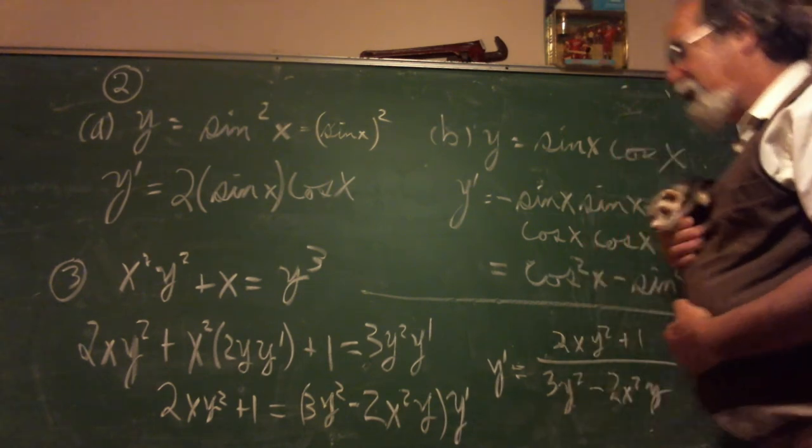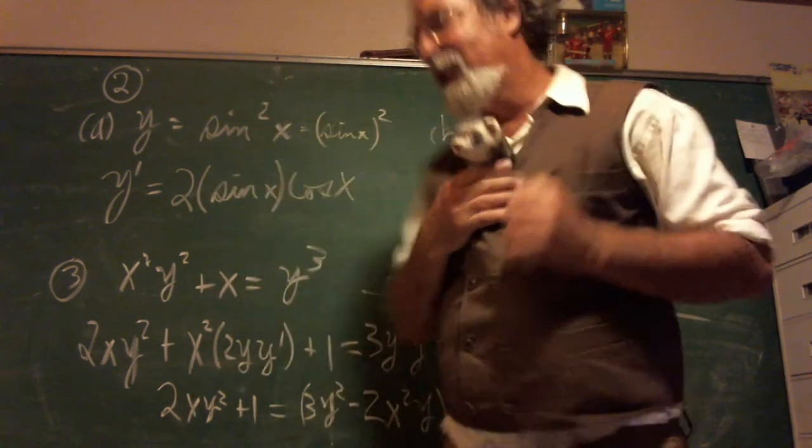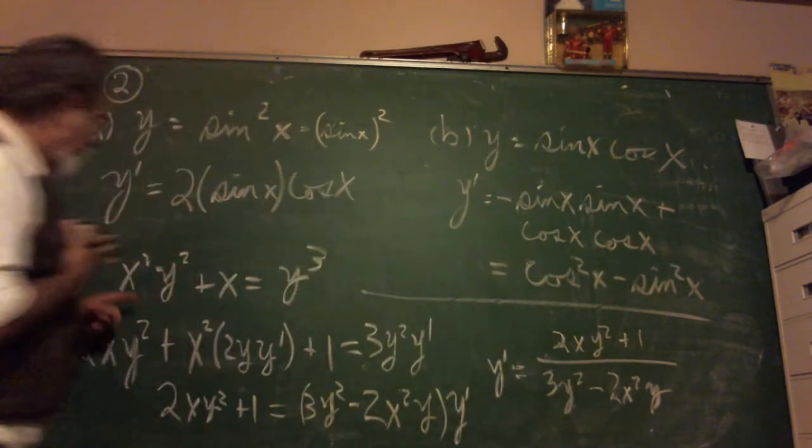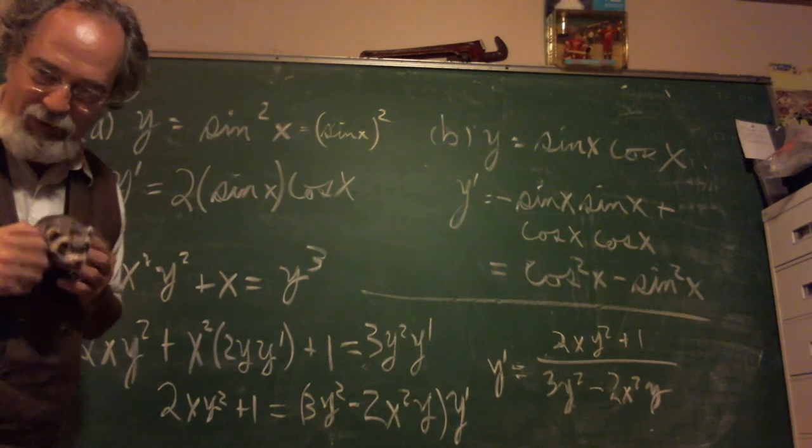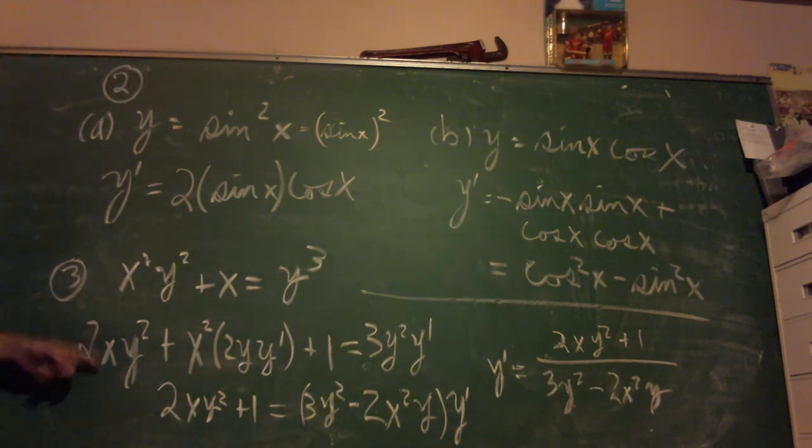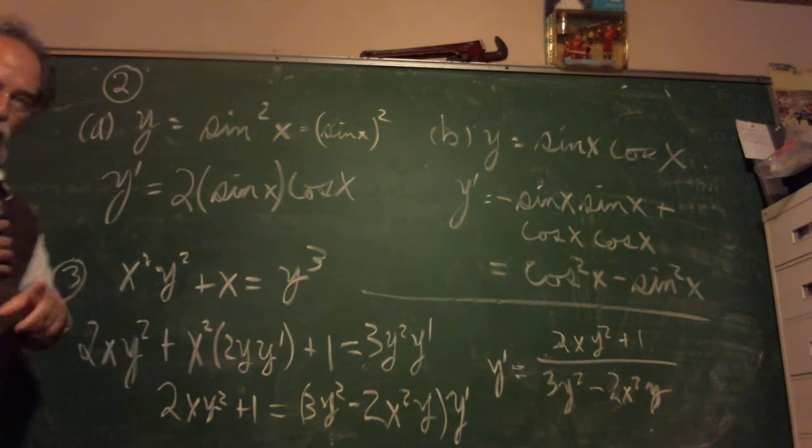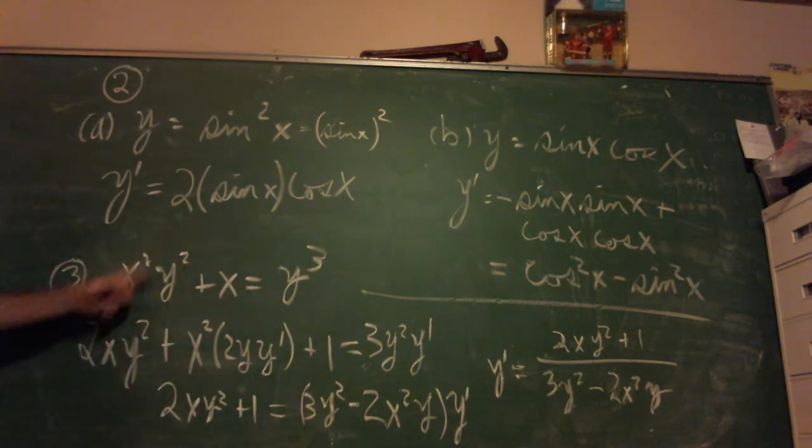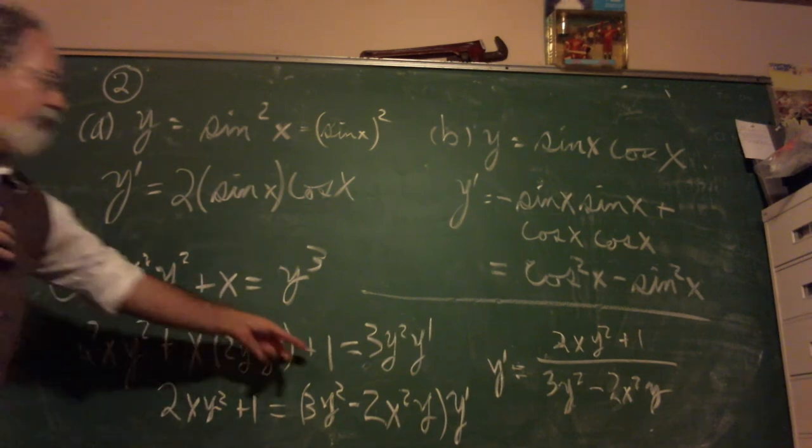Number three, implicit differentiation. So the original problem, hit it with that derivative. Product rule, so I gotta get two terms out of this and they're both pretty fancy. The 2x from derivative x², y² untouched, plus x² unchanged times the derivative of y² with respect to x, so that's why there's that y' there. The two comes down, y to one less power, times the derivative of y which is y'. Derivative of x is just one because we're taking the derivative of x, of course.